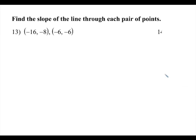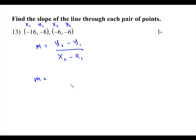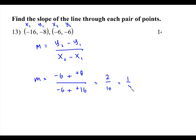Number thirteen: we need to find the slope through two points. Remember the slope formula: m equals y2 minus y1 divided by x2 minus x1. Making the first point x1, y1 and the second x2, y2, we plug in: y2 is negative 6, minus y1 which is negative 8, divided by x2 which is negative 6, minus x1 which is negative 16. The double negatives become positive. The top works out to positive 2, the bottom to positive 10. Reducing the fraction gives us 1 over 5 as the slope.